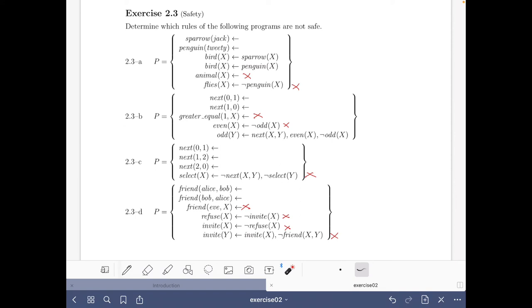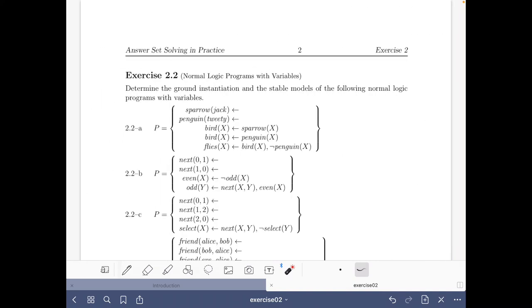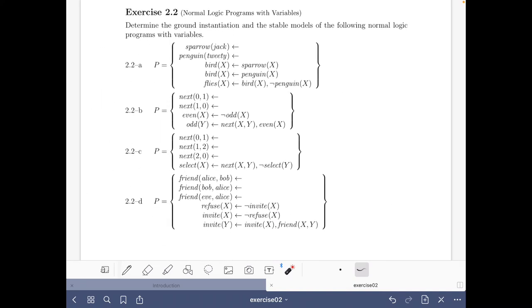If you have done the previous exercise on normal logic programs with variables, you will see that there were also some rules that were not safe. But what is important is that safety is a condition that the system imposes on programs we write, but the semantics are also well defined for programs that are not safe, as you have seen if you did that exercise.